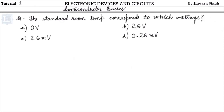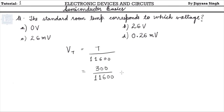The next question: 'The standard room temperature corresponds to which voltage — 0V, 26V, 26 millivolt, or 0.26 millivolt?' The options are always confusing, but the standard room temperature corresponds to 26 millivolt. Using the formula VT = T/11600 with T = 300 Kelvin gives approximately 26 millivolt. Either remember the concept or the formula — both ways you'll get the answer.